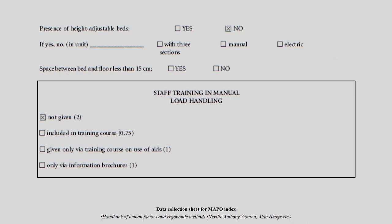You also need to check the presence of height-adjustable beds — yes or no — and whether they are manual or electric. For staff training in manual handling, in this particular case training is not given. So the training factor value is 2 — we mentioned that if training is included it is 0.75, if it is there but not fully effective then 1, and if it is not at all there then the value is 2.